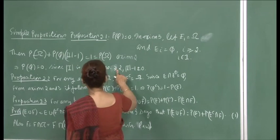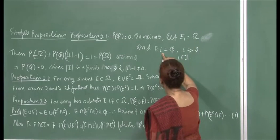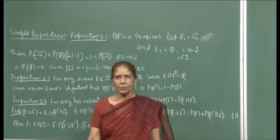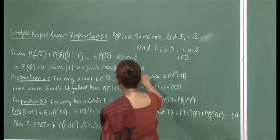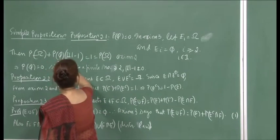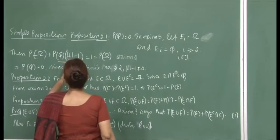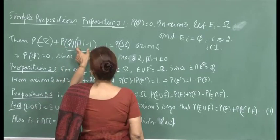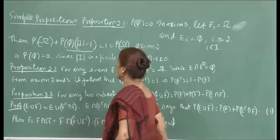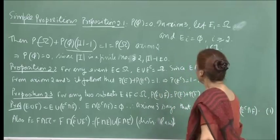Since |I| is a finite number greater than or equal to 2 — because there is at least one set equal to Ω and at least one empty set — the cardinality of I is 2 or more. This number is not 0, so P(Ω) cancels out and we are left with P(∅) × (|I| − 1) = 0, which means P(∅) must be 0.